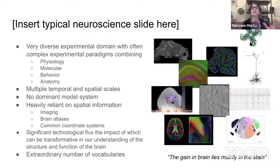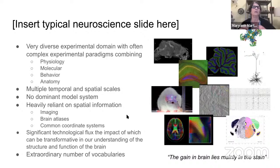To summarize, it's a diverse experimental domain with very complex experimental paradigms that traverse multiple temporal and spatial scales. There is no dominant model system — people work on all sorts of organisms — and it is very heavily reliant on spatial information, such as imaging, brain atlases, and common coordinate systems.